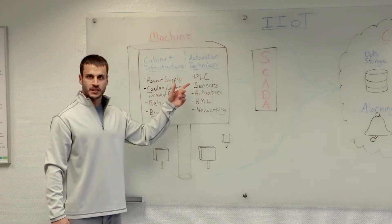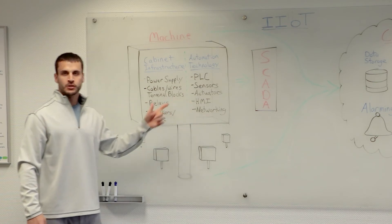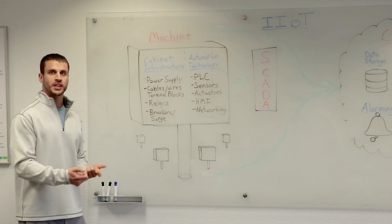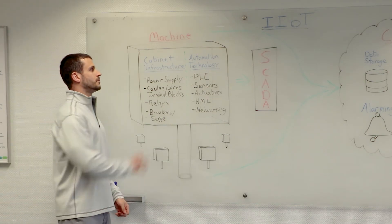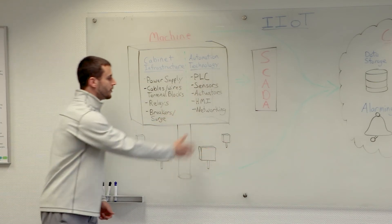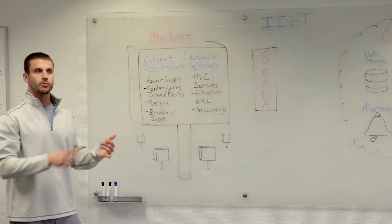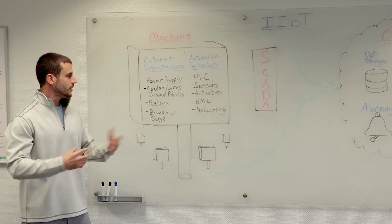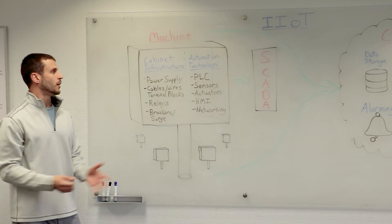Since the PLC is a computer, a lot of times you'll have a human machine interface or HMI so that an operator can access the PLC locally, make some changes, and see what's going on in real time. And then a lot of times you don't just have one machine — you might have a bunch of machines out in the field and want them to talk to each other. So you'll have things like networking technology: your routers, switches, gateways, and WLANs — anything that lets this machine share data with any of the other machines on the network.